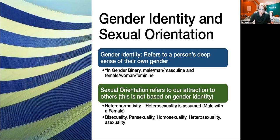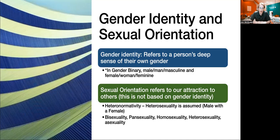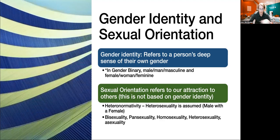Let's talk about gender identity and sexual orientation. Gender identity refers to a person's deep sense of their own gender. In the gender binary, it was male, man, masculine and female, woman, feminine — a very limited scope. Now we're looking at how gender identity connects to sexual orientation and our sense of self-value. Sexual orientation refers to our attraction to others and is not based on gender identity. Heteronormativity is the idea of man-and-woman culture being the norm. Heterosexuality is assumed male with female. We also have bisexuality, pansexuality, asexuality, homosexuality, and more. It really comes down to what is you and what is comfortable to your own sense — a personal evaluation.